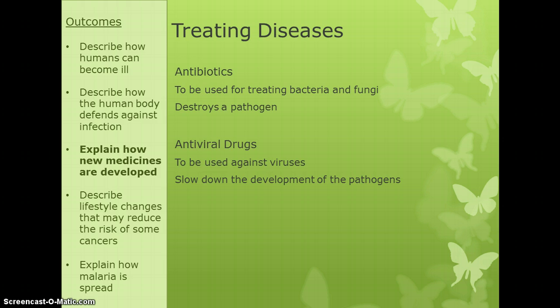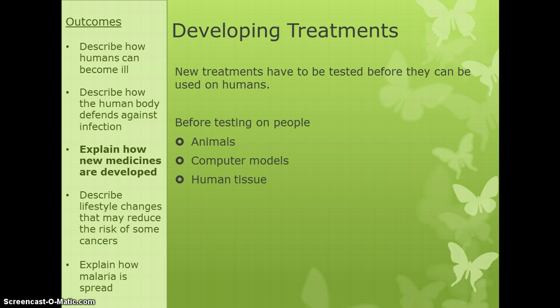If people do get ill, the immune system isn't always enough, so we need treatments. Antibiotics are only useful for treating bacterial and fungal infections — they work by destroying the pathogen. Viruses are more difficult. We do have antiviral drugs, but they don't actually destroy the virus — they slow down the development of the pathogen, which gives the immune system a chance to fight it off.